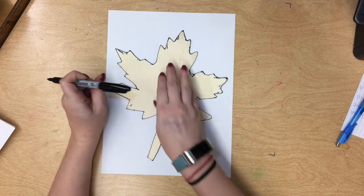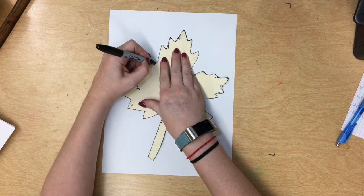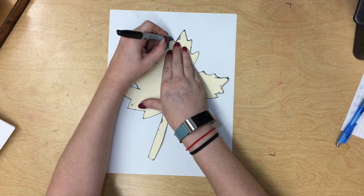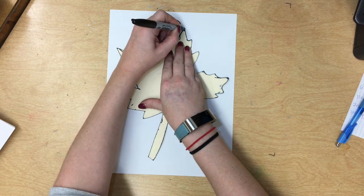sharpie. Make sure that the cap is on the back. Now you might need a friend to help you. You might take turns. I'm going to speed up and trace this leaf.